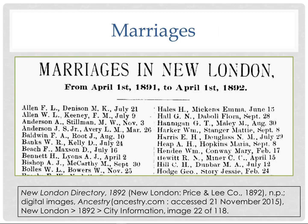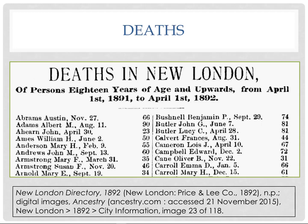Some directories even include marriages. The New London, Connecticut directory of 1892 listed all marriages that occurred in a one-year period prior to publication — this is unusual, but look for these hidden gems. They also listed all deaths from the previous year. So look through the directory carefully to find all these hidden gems.